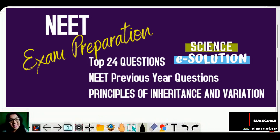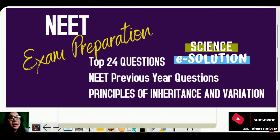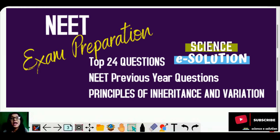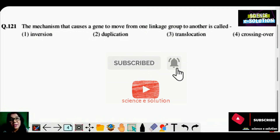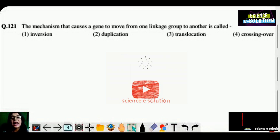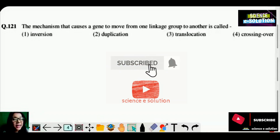Hello and welcome to our channel Science E-Solution. In today's video we will see Chapter Genetics, i.e. Principles of Inheritance and Variation. In the previous 5 years, there are 24 questions — are you ready to solve them? NEET aspirants, are you ready? We will take important videos so that you are ready to track the NEET exam.